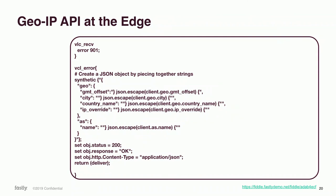We also have geo information available from our dataset. In this sample, in vcl_recv when we receive the request, we send to the error routing, which creates a response at our server containing the geo client information, and returns it to the client in JSON format. What's interesting is there is no origin server — we just receive the request from the end user and return the response directly. This is a true serverless application.